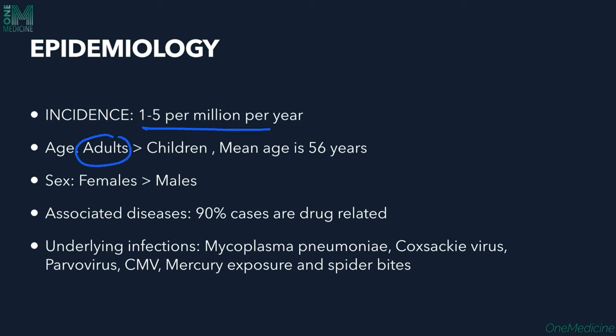Adults are more commonly affected, with a mean age of occurrence around 56 years. Females are more prone to getting this condition. Ninety percent of cases are drug related, so drug history must be elicited properly. Certain viral infections also predispose to AGEP, as do other infections like mycoplasma pneumonia, coxsackie virus, parvovirus, and cytomegalovirus.